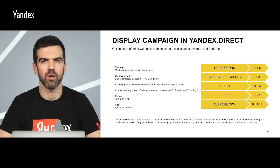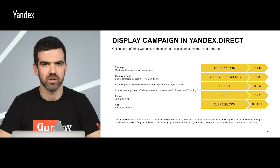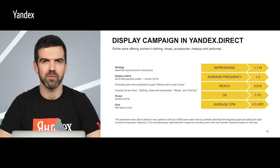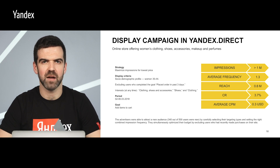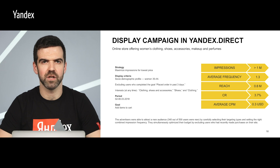They selected the following audience interests: clothing, shoes, and accessories; and shoes and clothing. By carefully selecting their targeting types and setting the right combined impression frequency, the advertiser was able to attract an audience of interested users, of which 340 out of 500 were new. They simultaneously optimized their budget by excluding users who had recently made purchases on their site.